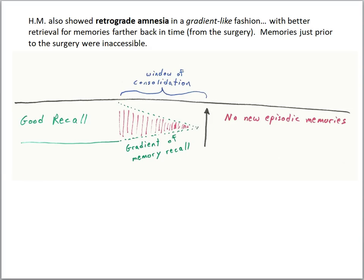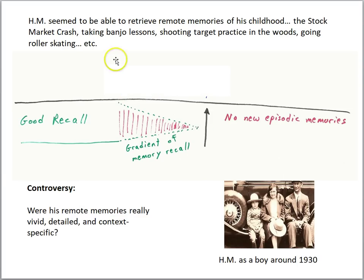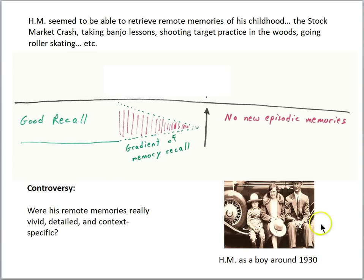HM seemed to be able to retrieve remote memories of his childhood — like the stock market crash, taking banjo lessons, shooting target practice in the woods, going roller skating. Here's a picture of HM as a boy, somewhere around the 1930s. The fact that he could tell researchers about his childhood suggested he had access to remote episodic memories from early in his life, so we have good recall in that part of the diagram.